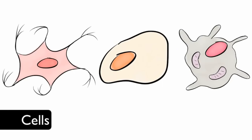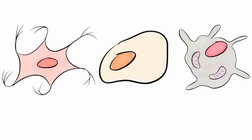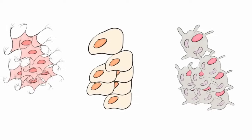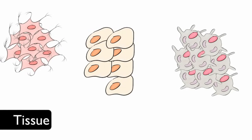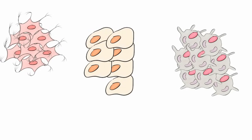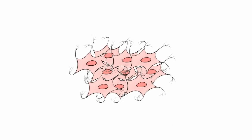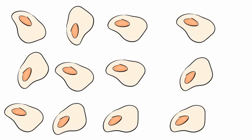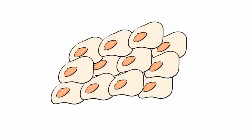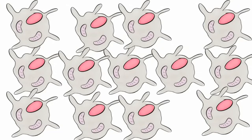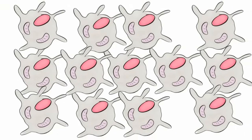When cells of similar structure and function join together, they form tissue. A group of brain cells is called brain tissue. A group of lung cells is called lung tissue. And bone cells joined together is called bone tissue.